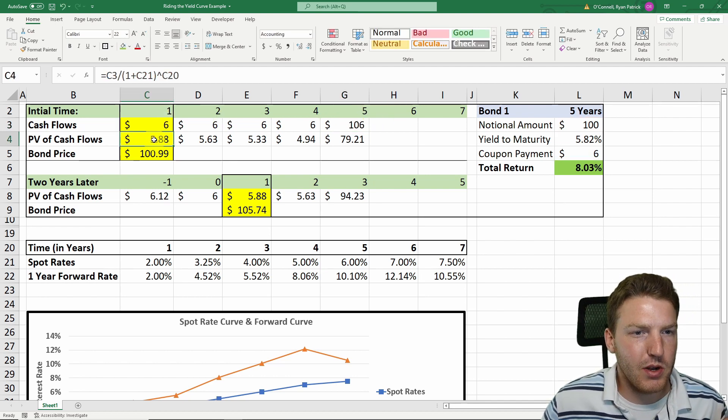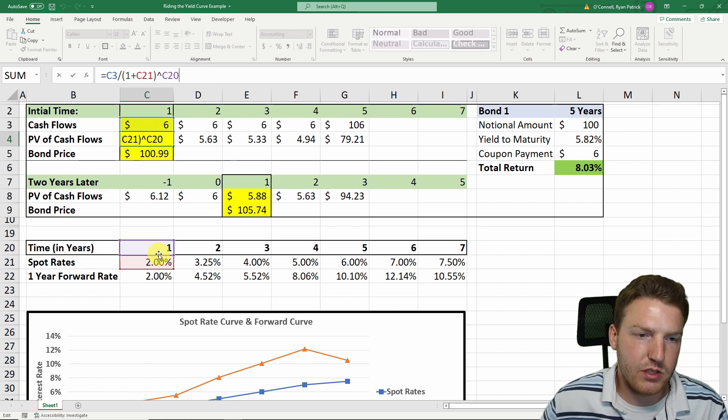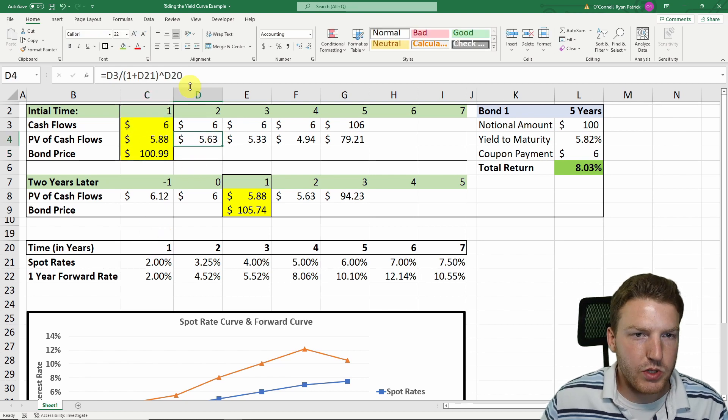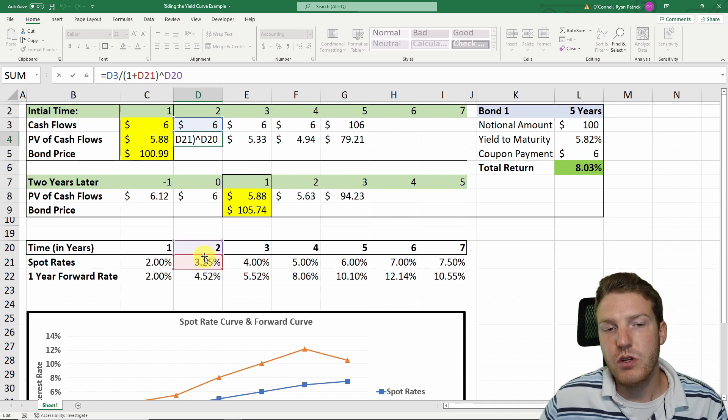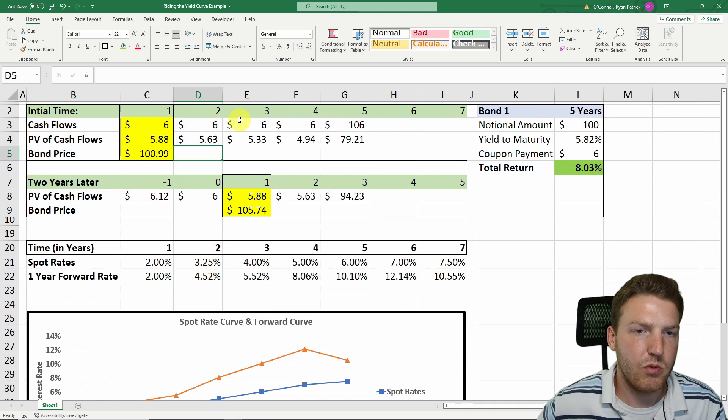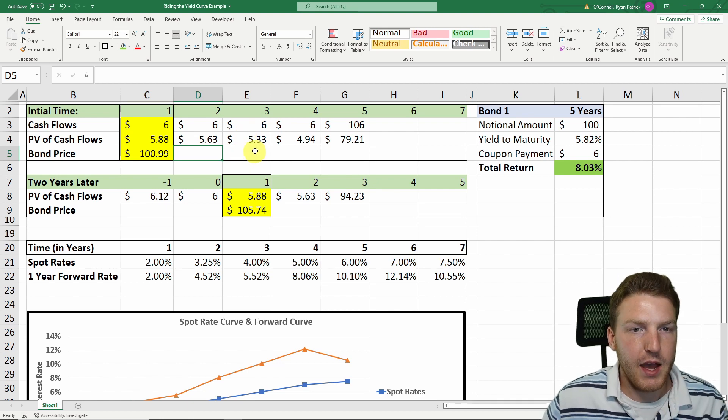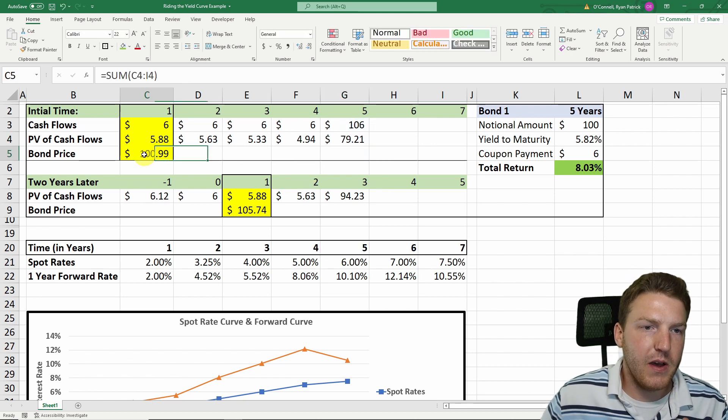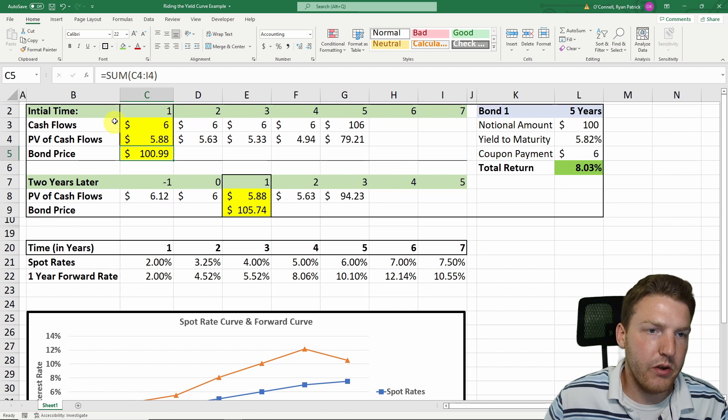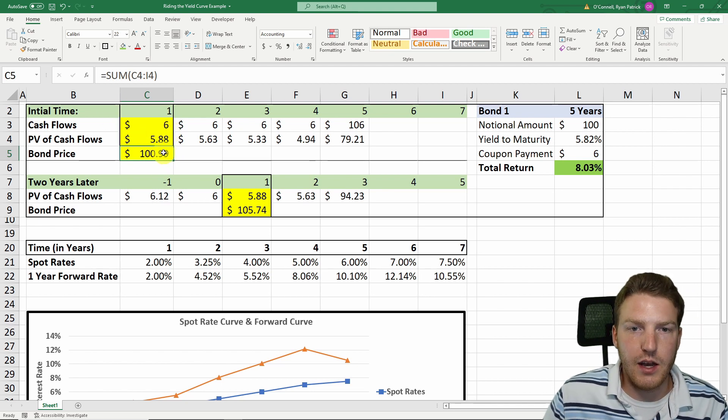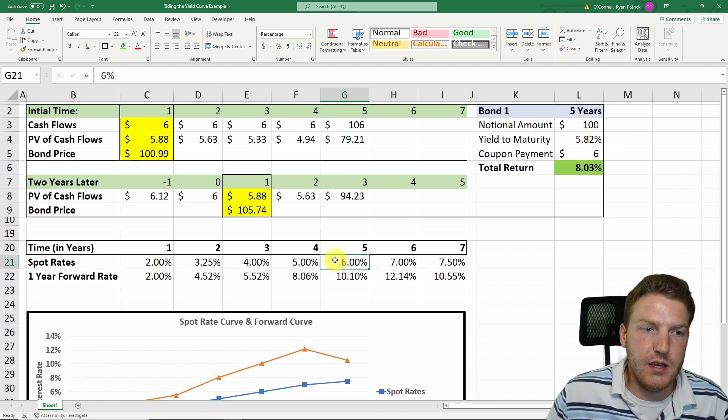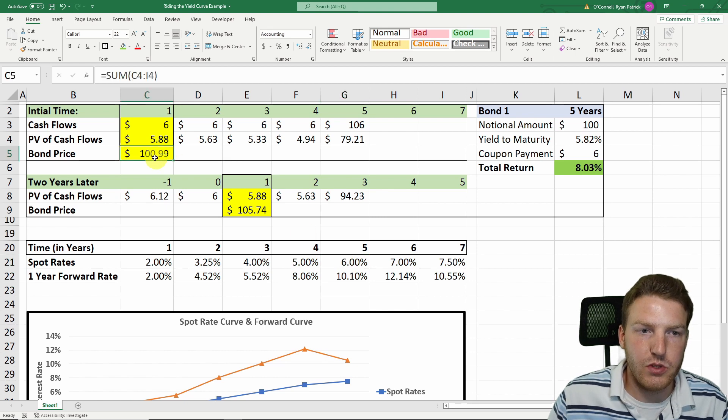Then we took the present value of each of these cash flows. We took the $6 divided by 1.02 to the power of one. For year two, we took the $6 and divided it by the two-year spot rate to the power of two, because as we get further out in the future, we're going to have to discount it back by more years. All the way out to the fifth year, we're discounting back by the five-year spot rate. We found that right now, today, before year one, it would cost us $199 to buy this bond. It trades at a premium because the yield to maturity of 5.82% is actually lower than the spot rate at that time of 6%.